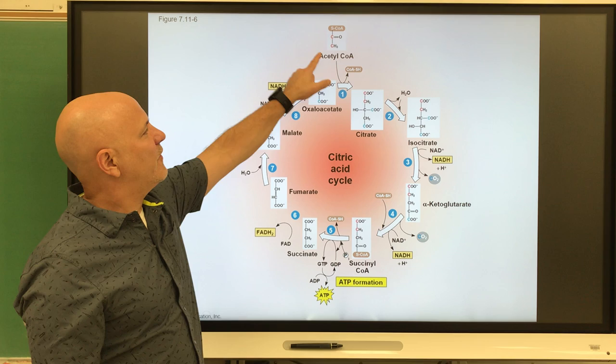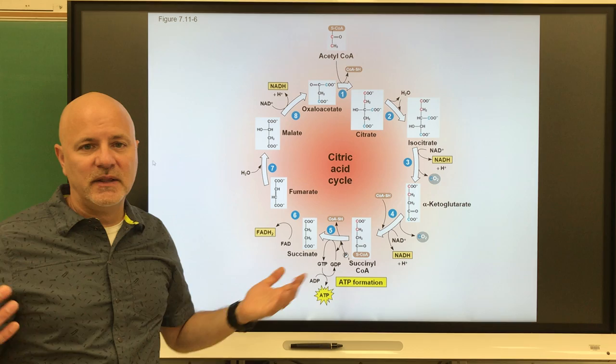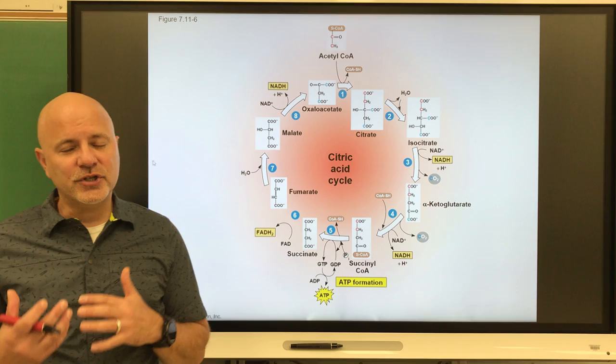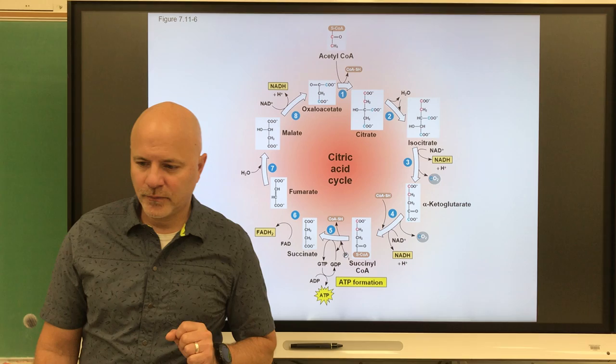The Krebs cycle takes acetyl CoA from the transition reaction along with oxaloacetate and makes citrate — that's the first step. There is no main product out of this cycle; we're just doing energy extraction, making energy molecules.